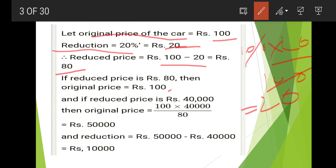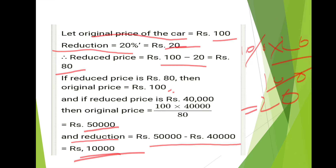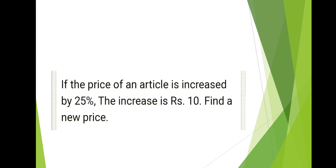By the unity method, if reduced price is 40,000 — it is given 20% to 40,000 — then the original price will be 100 into 40,000 by 80. When you solve you will get rupees 50,000. So reduction in price is 50,000 minus 40,000, which equals rupees 10,000.